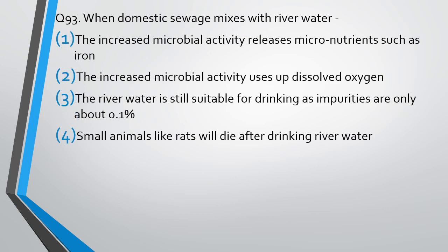Question number 93: When domestic sewage mixes with river water — (A) increased microbial activity increases micronutrients such as iron; (B) increased microbial activity uses up dissolved oxygen; (C) the river water is still suitable for drinking as impurity is only about 0.1%; (D) small animals like rats will die after drinking river water. The correct answer is Option 2 — increased microbial activity uses up dissolved oxygen.